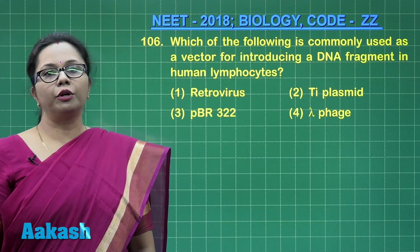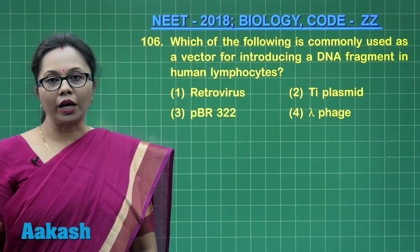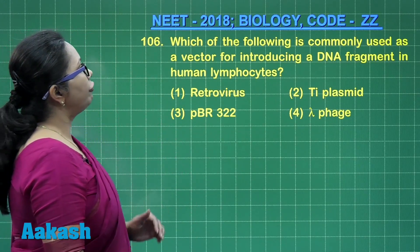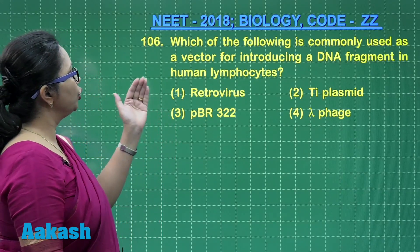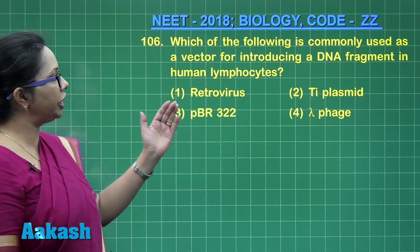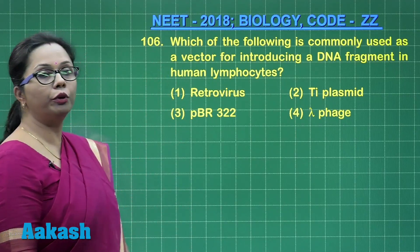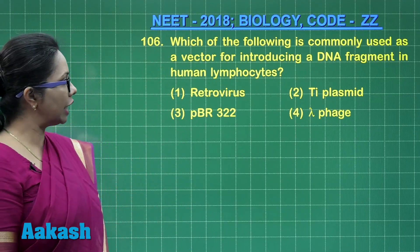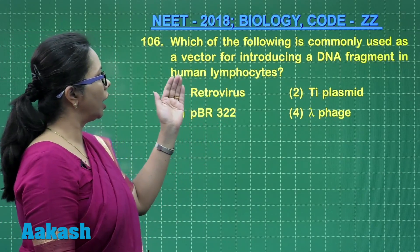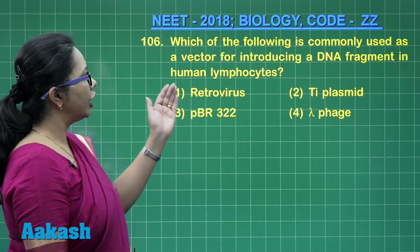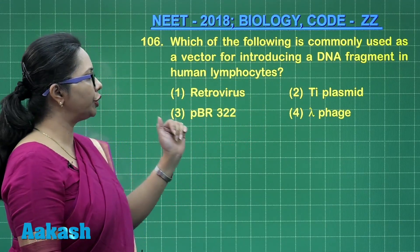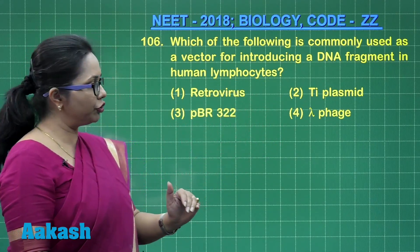Now taking up question number 106: which of the following is commonly used as a vector for introducing a DNA of interest in human lymphocytes? The four vectors given to us are retrovirus, Ti plasmid, PBR 322, and lambda phage.